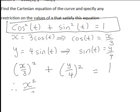That could be written X squared divided by 9 plus Y squared divided by 16 equal to 1. You might recognize this as the equation of an ellipse.